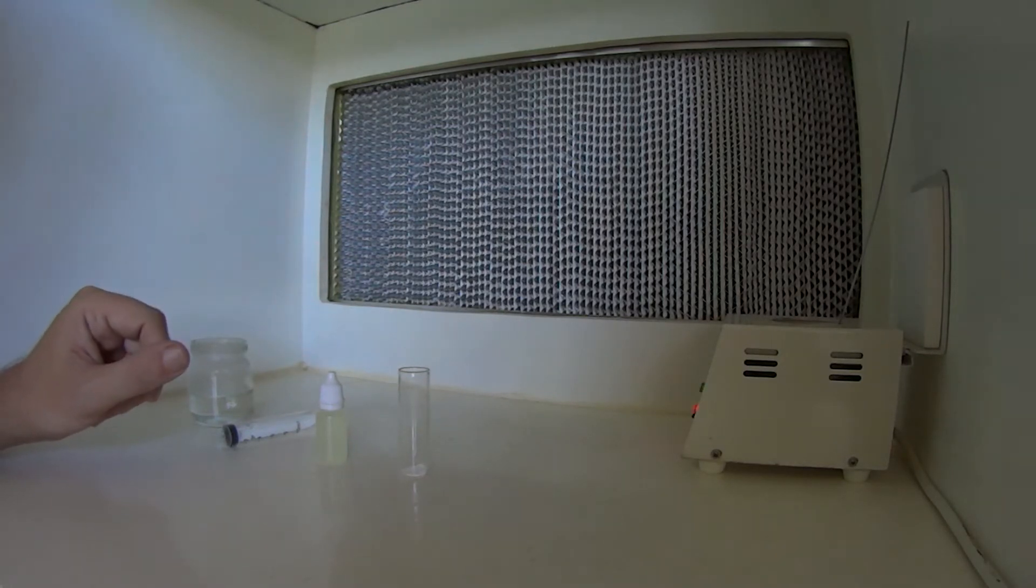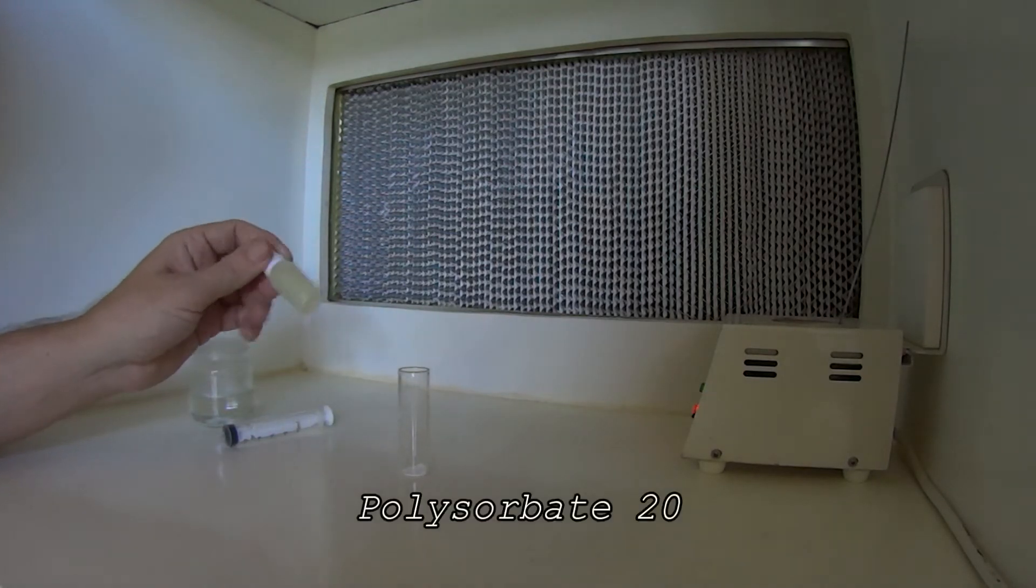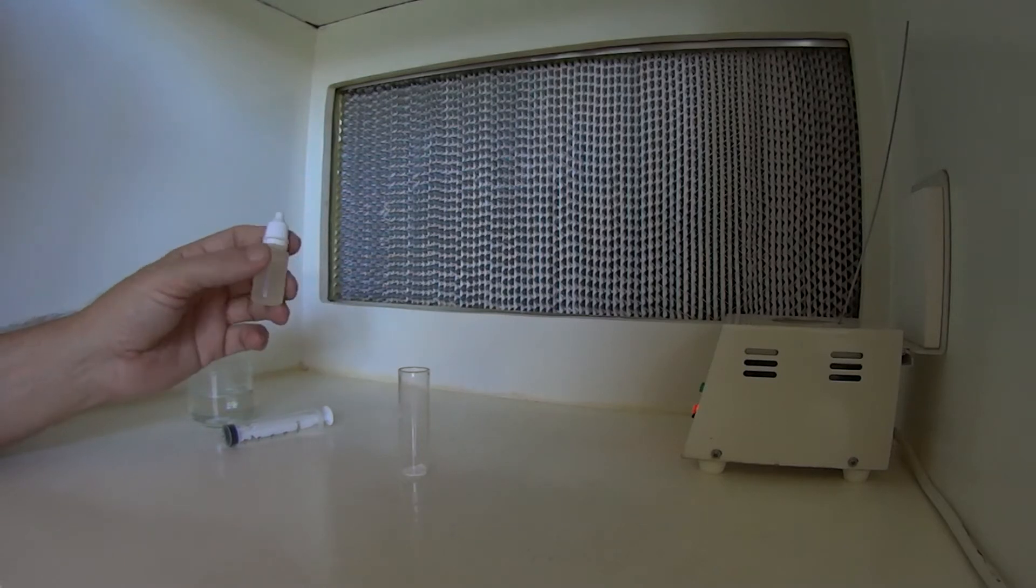So what we use is a product called Polysorbate 20. I'm not going to go into what it is, I'm sure you can Google. Simply we get our measured amount of Tricantanol in a little glass tube or something similar, because it requires heating.